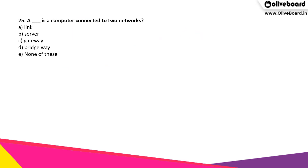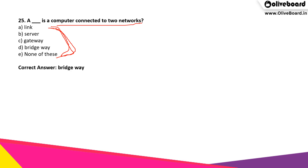A dash is a computer connected to two networks. What is the correct answer from the following options? It is a bridgeway. A bridgeway is a computer that connects two networks.